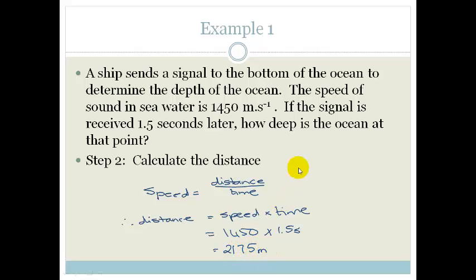But is that really how deep the ocean is? No, because that was the time it took to get both down to the bottom of the ocean and both back up. So, what we've done is we've found double the distance. So, what we now need to do is divide this answer by 2 and the actual distance is 1,087.5 meters. That's how deep the ocean was at this point in time.